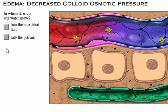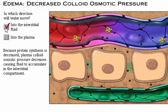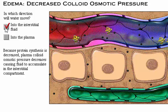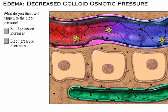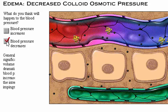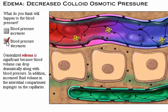In which direction will water move? Because protein synthesis is decreased, plasma colloid osmotic pressure decreases. While fluid moves out of the plasma into the interstitial compartment, less fluid moves into the plasma from the interstitial compartment, resulting in fluid accumulation in the interstitial compartment. Generalized edema is significant because blood volume can drop dramatically along with blood pressure. In addition, increased fluid volume in the interstitial compartment impinges on the capillaries, restricting blood flow.